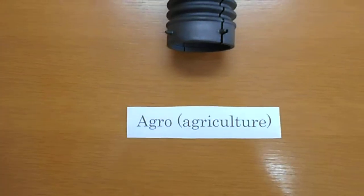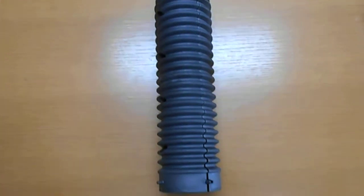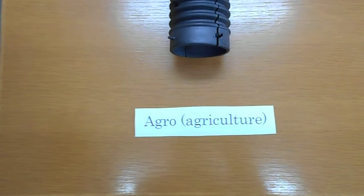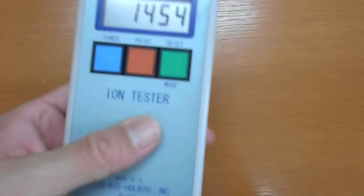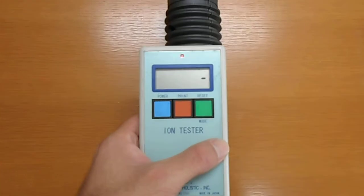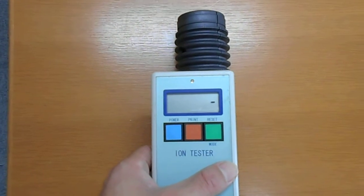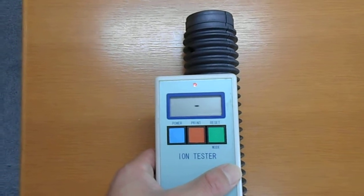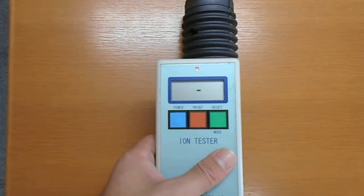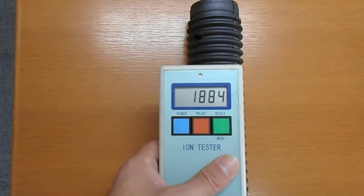Finally, this is a tube inside agro, a model of dedica which we use for agriculture mainly. Reset. Again, this is designed to emit quite high number of electrons because we don't use the earth system for the agro model, so we've particularly designed this one to produce a lot of negative ions. One thousand eight hundred and eighty four.